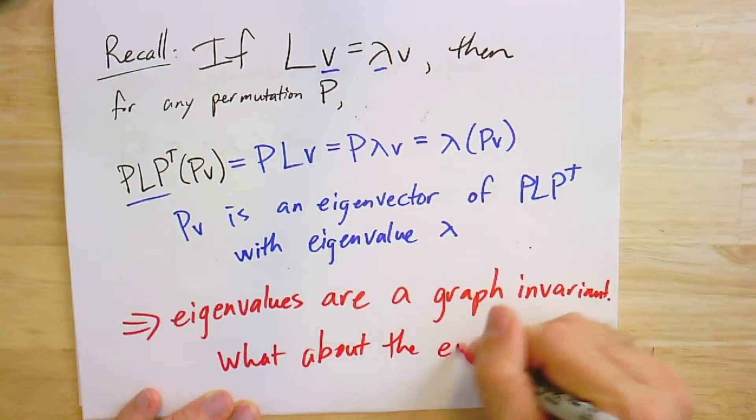So you might ask, what about the eigenvectors? Can we use them in some ways? They're not invariant to isomorphism, but maybe they're still useful. Let's see. Before I show you how they're useful, though, let me tell you how they're even worse than you thought they were.